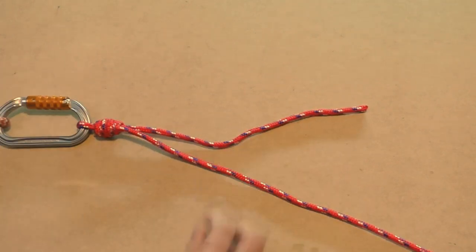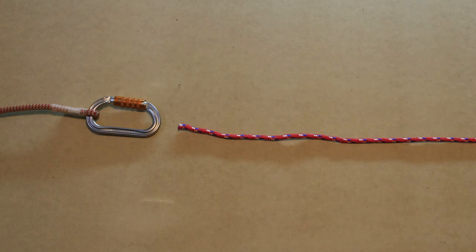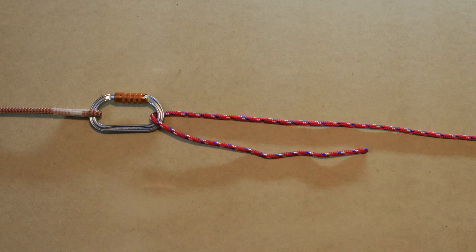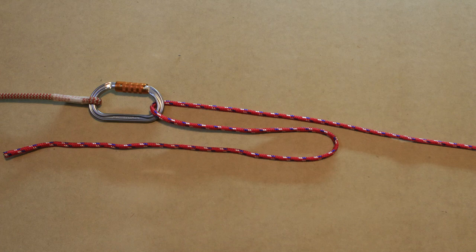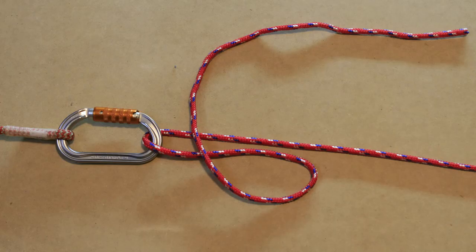Next we will show you in step by step instructions how to tie the uni knot. First take the working end and poke it through the eye of the object you are tying onto. Make sure to pull enough line through to form the knot. Then we take a bite of line and transform it into a loop.